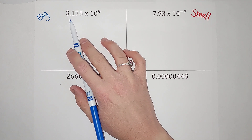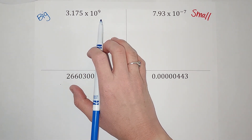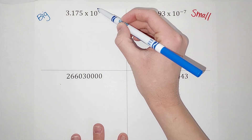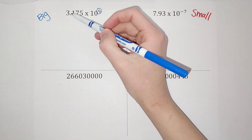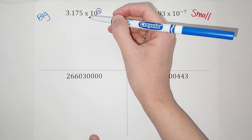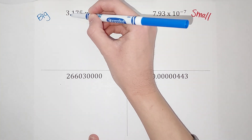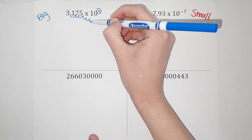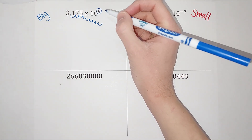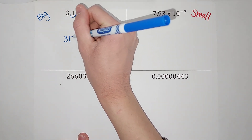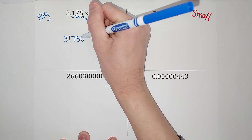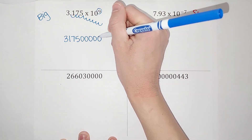This is a number in scientific notation: 3.175 times 10 to the ninth power. It's a lot easier to tell how big it is. If I wanted to convert this, I look at my exponent which is nine, and I'm going to take my decimal point and move it to the right because it's positive — nine places. So I'm taking 3.175 and moving my decimal point over nine times: one, two, three, four, five, six, seven, eight, nine.